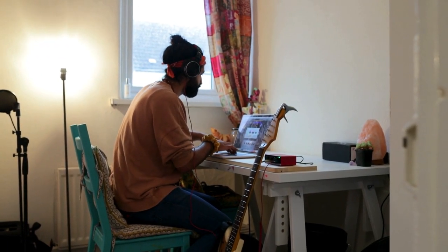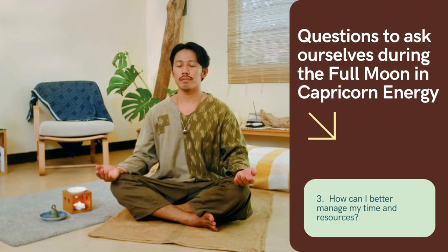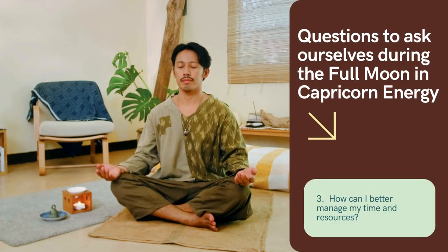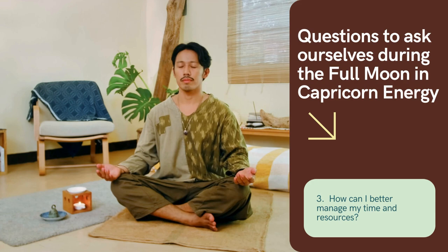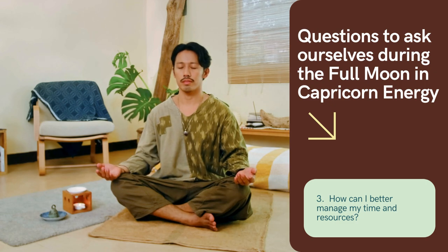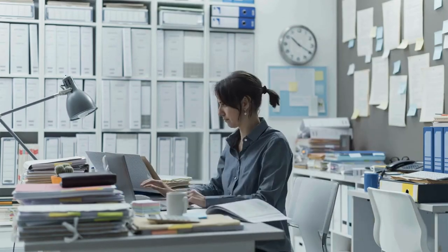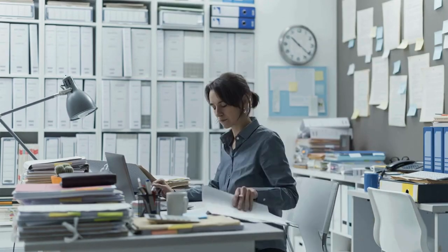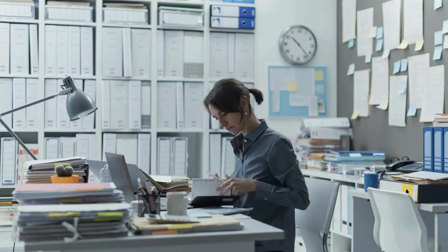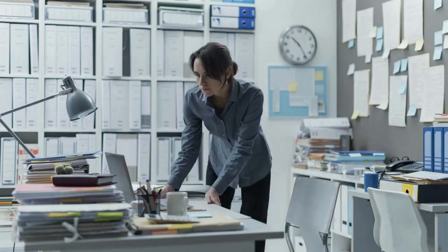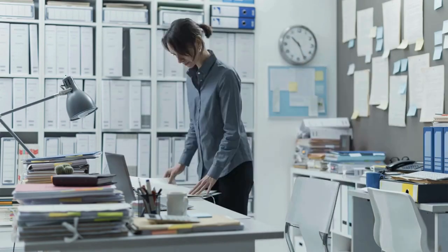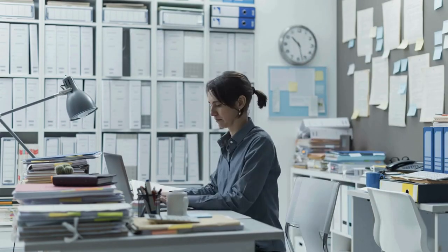And the last question you should ask yourself is, how can I better manage my time and resources? Efficient time and resource management are hallmarks of Capricorn energy. Consider how you are currently using your time, energy, and resources. Are there areas where you could be more efficient or organized? Think about strategies to enhance your productivity and ensure that you are using your resources wisely to achieve your goals.